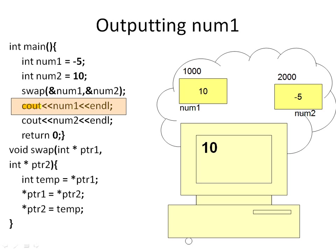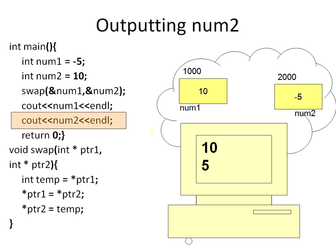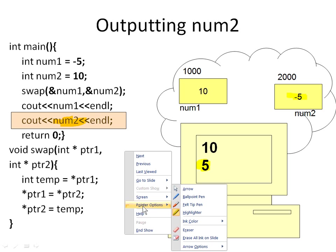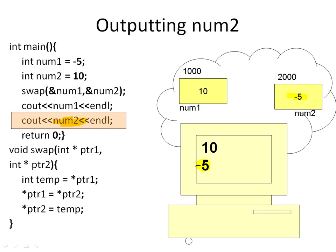What is left in RAM is num1 and num2 in their swapped state. If I execute 'cout num1', then since num1 is 10, it's going to print 10 to the console. And if I 'cout num2', it's going to print minus 5 to the console. There's a small slide error here — there should be a minus sign — so let me fix that. There's a minus here. Sorry about the error.